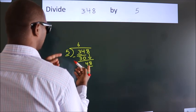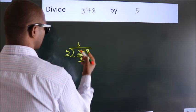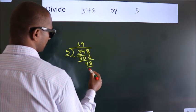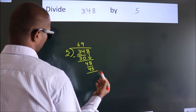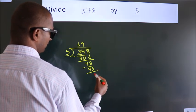A number close to 48 in the 5 table is 5 times 9, 45. Now, we subtract. We get 3.